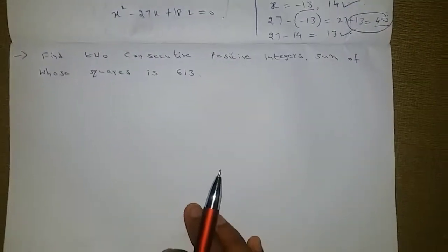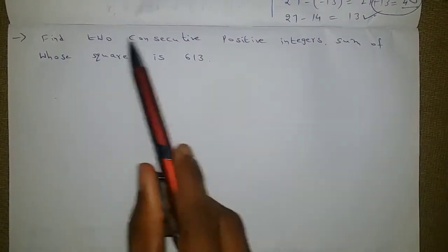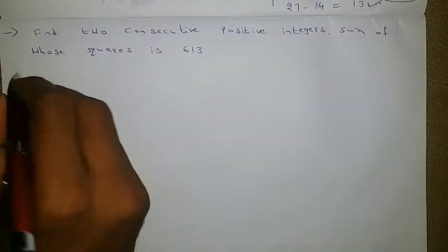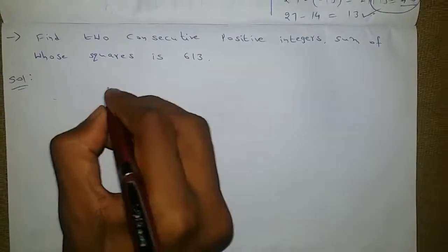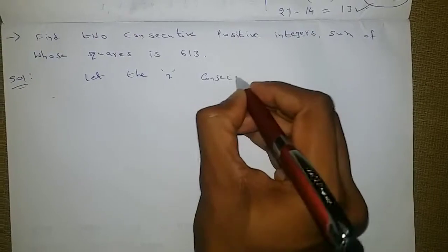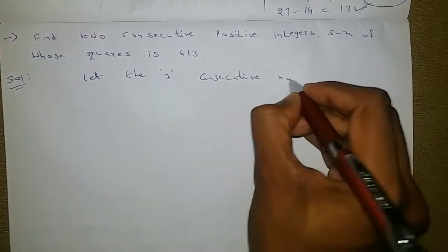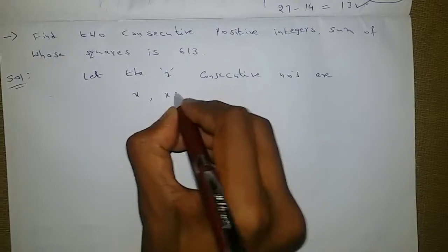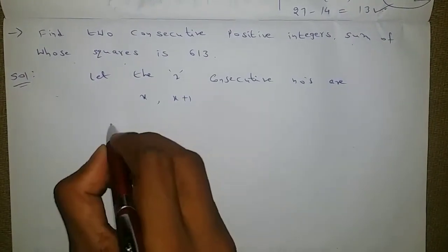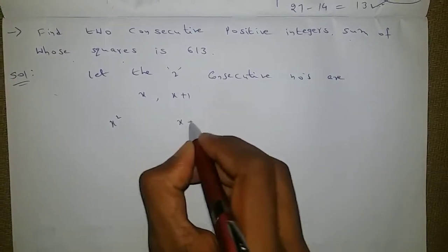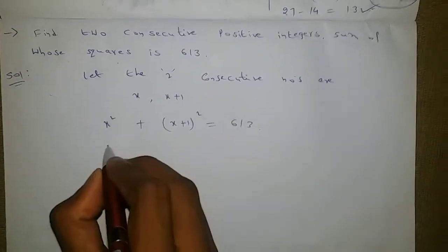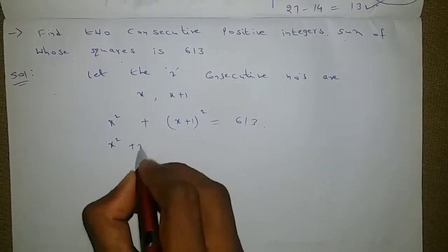Let us look at the next question: find two consecutive positive integers whose sum of squares is 613. Let the two consecutive numbers be x and x plus 1. The sum of their squares is x squared plus x plus 1 whole squared equals 613.